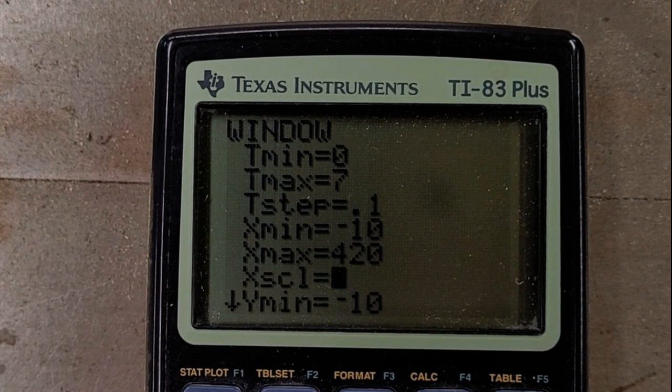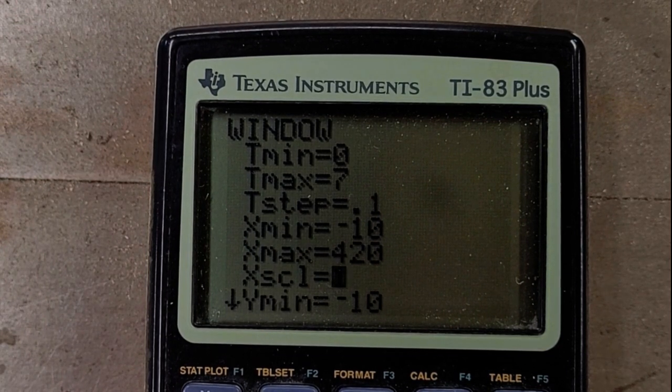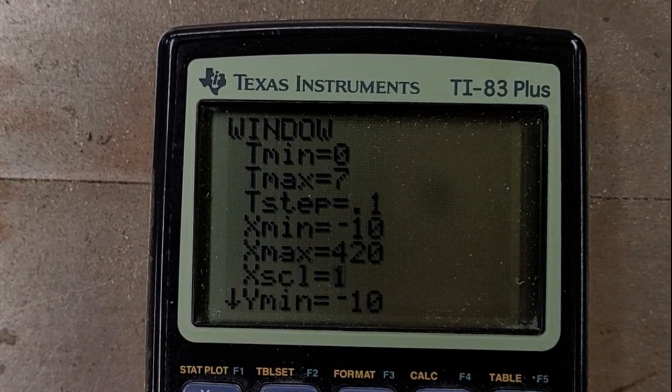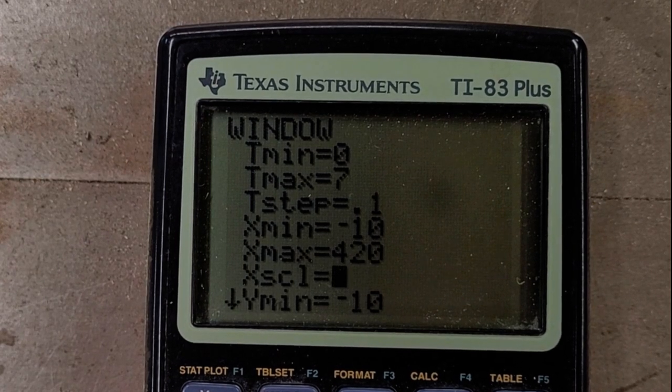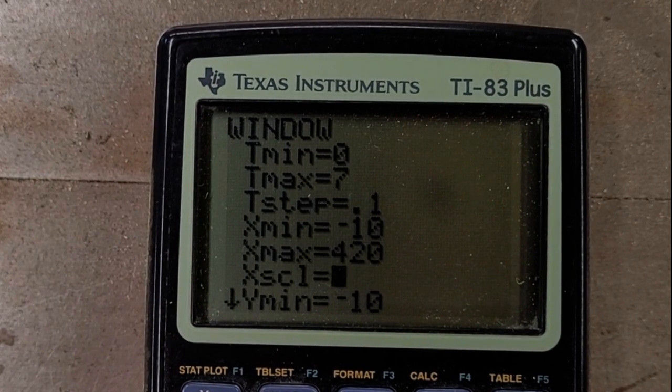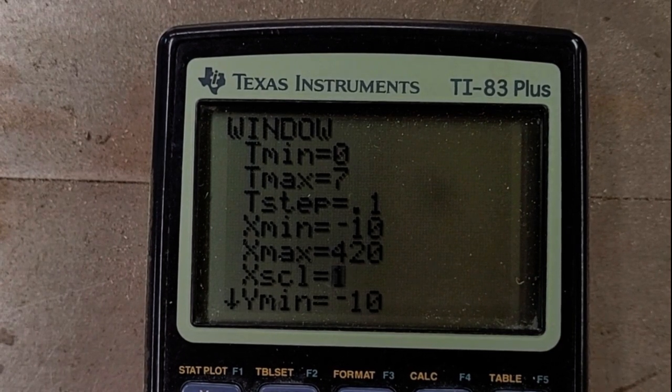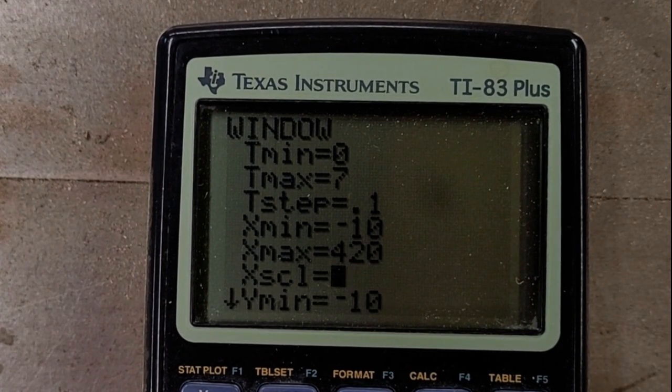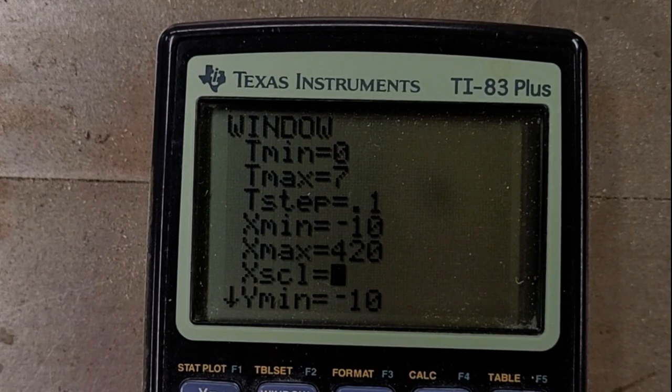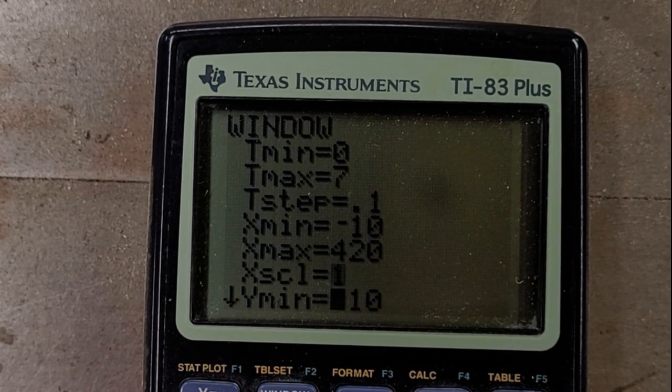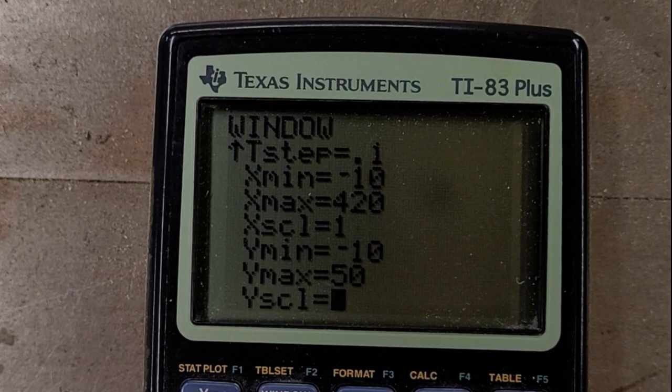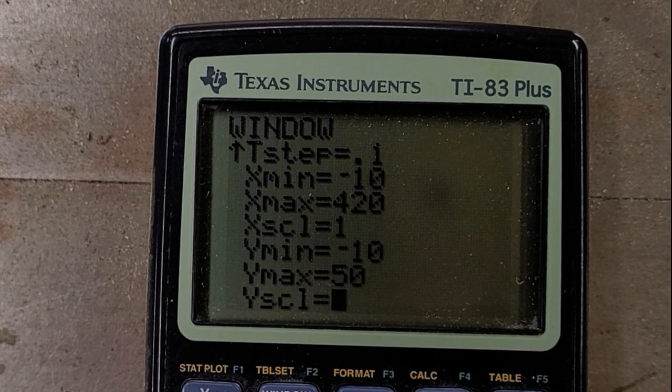Why did I start at negative 10? I just wanted to kind of see a little bit more of the back side of the graph. And why did I go to 420? Because maybe the home run will go into the stand so I can catch it. So I just kind of went a little further. Now the y min and max, to be honest I don't really know much about that, but it does represent the height of the ball.